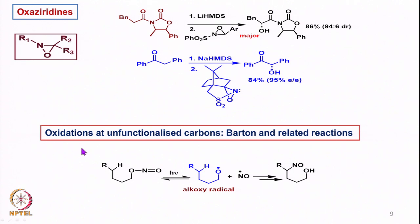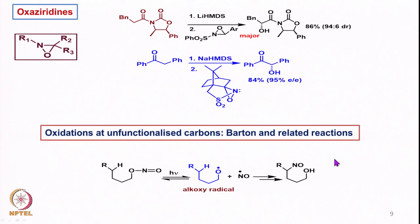Then we looked at oxidations at unfunctionalized carbons — Barton and related reactions. Starting from a nitrite ester we get the corresponding alkoxy radical, then abstraction of a hydrogen and carbon-NO bond formation. Such products were then converted to many other products.